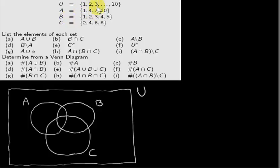Here we have some sets. U, the universal set, is the set of all positive integers from 1 up to 10. A is the set {1, 4, 7, 10}. B is {1, 2, 3, 4, 5}. C is {2, 4, 6, 8}.